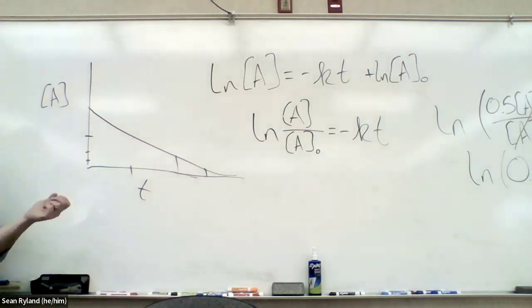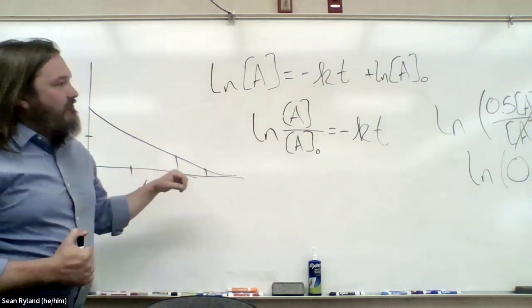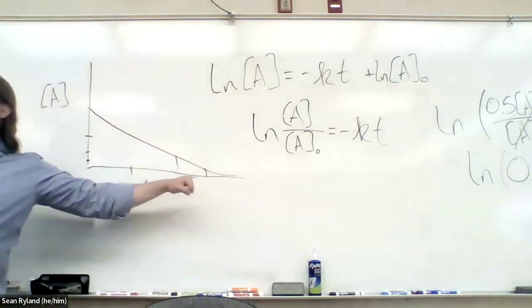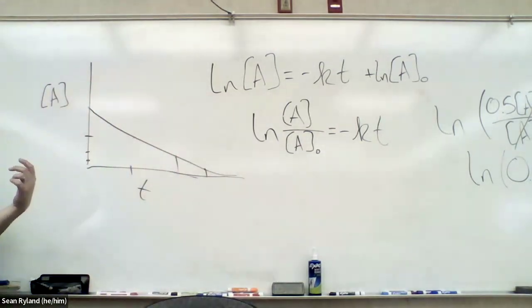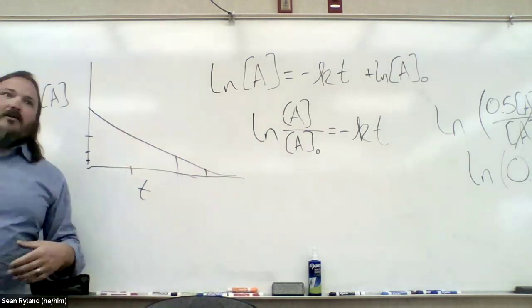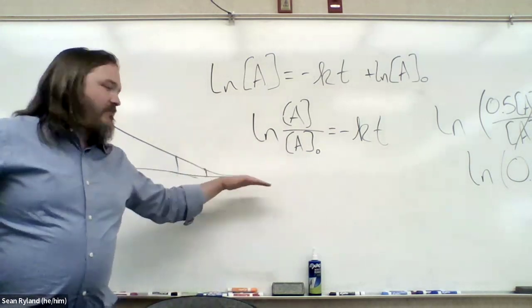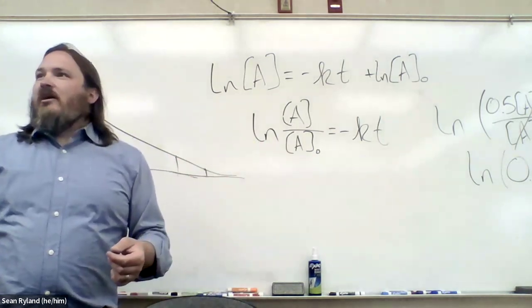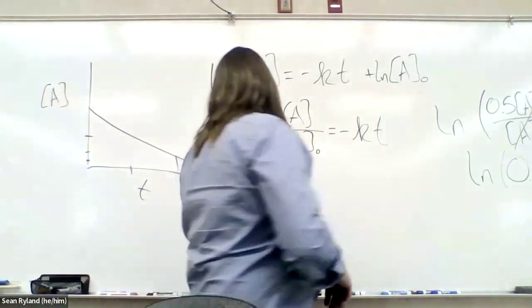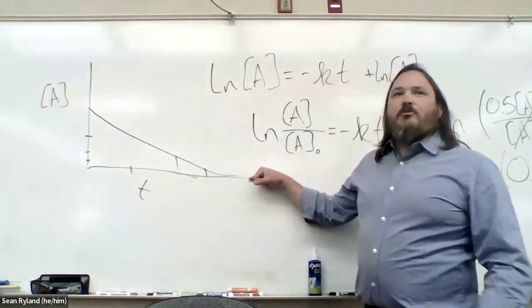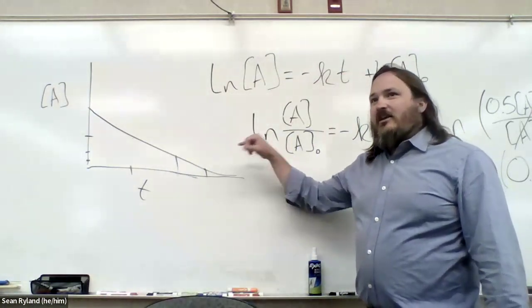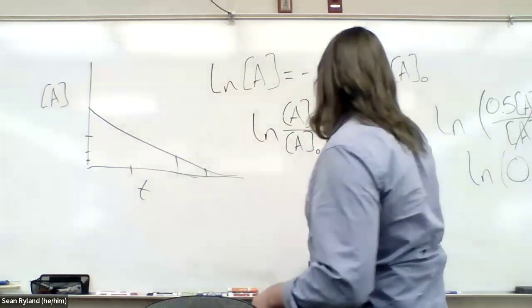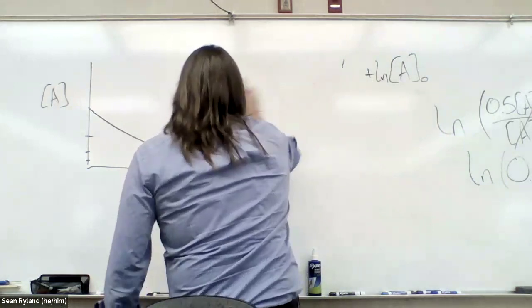And so that only works for first order processes. There's a lot of chemical reactions that are first order reactions. But the ones that have a really long half-life where this process happens over a really long period of time tend to be nuclear reactions. The half-lives for a lot of first order reactions that we would do in the lab might be in seconds.